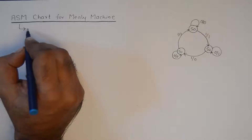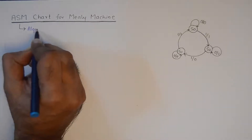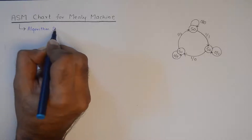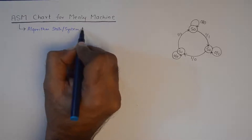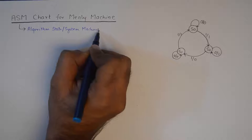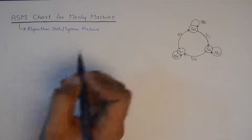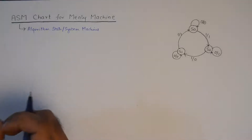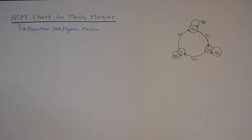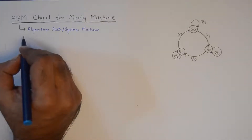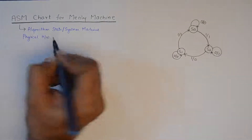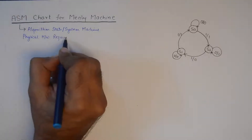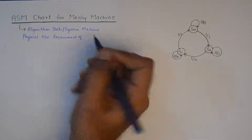ASM stands for Algorithm State Machine — in many books you will find it as 'State' and in others as 'System', so it is Algorithm State Machine. The chart is in the form of an algorithm, and the reason why we use it, as I mentioned, is that it tells us about the physical hardware requirement of the digital machine.